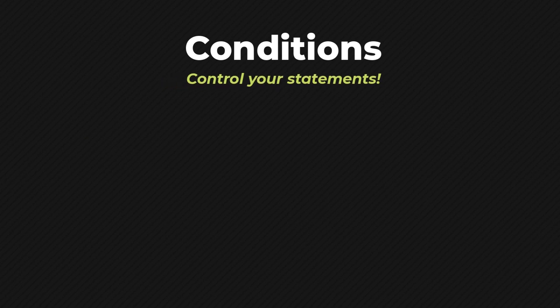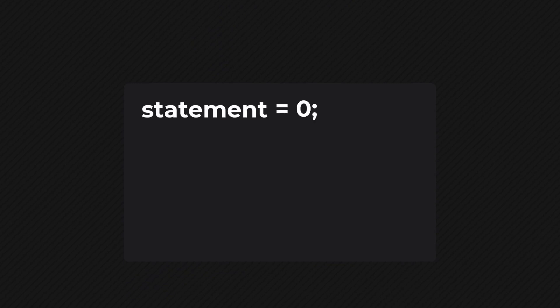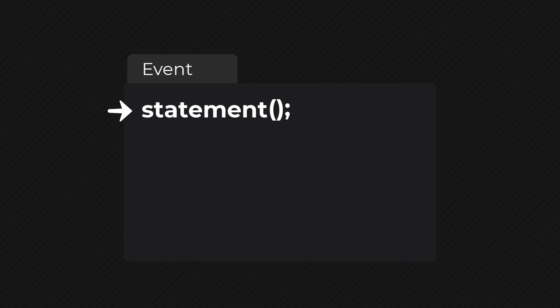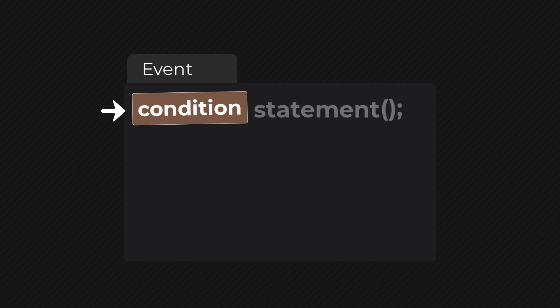Conditions are one of the most powerful features of any programming language because they allow you to control your statements. For example, let's say you have a statement that sets a variable or calls a function — it's a statement, and it's going to run when the event runs. So when the event does run, there is nothing stopping this statement from running. But let's say we want to put some sort of a condition on this statement.